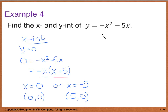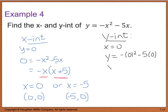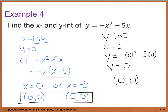For the y-intercept, we set x equal to zero. Substituting into the equation: y equals negative 0 squared minus 5 times 0, so y equals 0. The y-intercept coordinate point is (0, 0). So our final answers are two x-intercepts at (0, 0) and (negative 5, 0), and one y-intercept also at (0, 0).